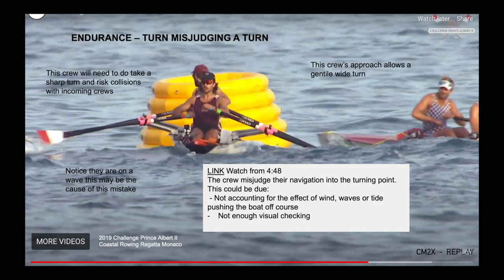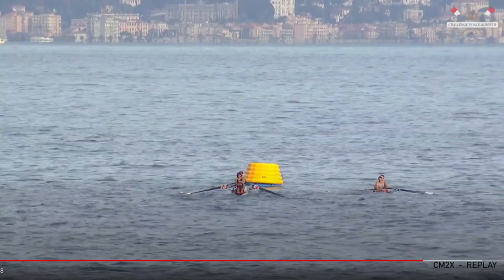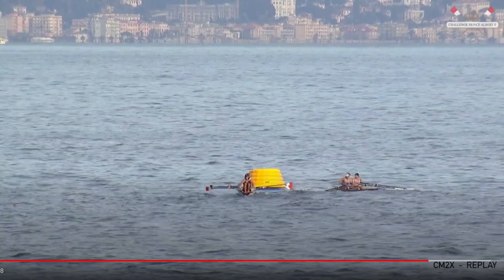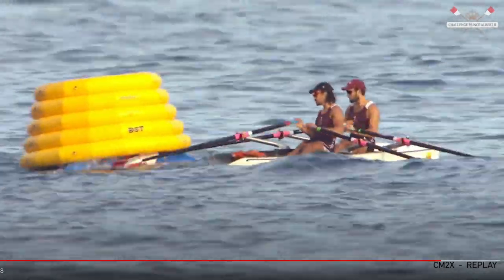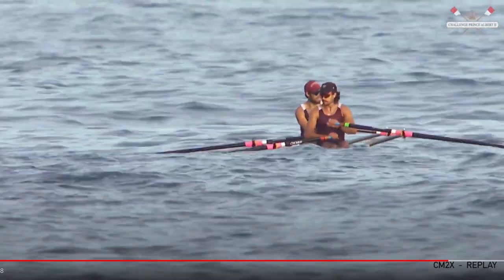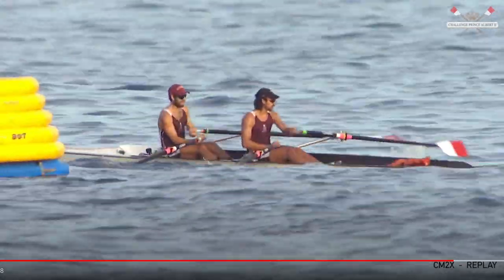This example is very similar — a crew surfing down on a wave and misjudging their navigation into the turning point. Factors that could cause this include not accounting for wind, waves or tide, or the boat being pushed off line by surfing down a wave, which is very difficult to control. Or simply not enough looking around — if you're only looking over one shoulder, you might mistake one turn for another. You can see them coming down in nice swelly conditions, having to do a lot of steering to get around the turn, almost stationary as they come round — a huge amount of boat speed lost.